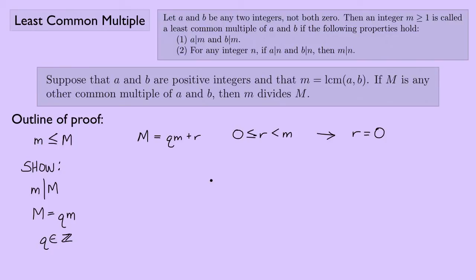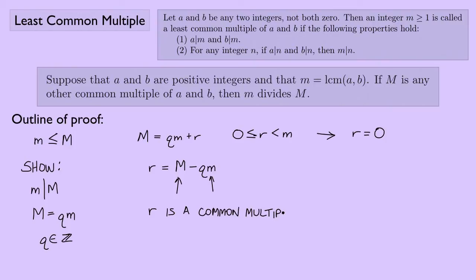I can solve for r: r equals uppercase M minus q times lowercase m. Now, both uppercase M and lowercase m are multiples of a and b, so r must also be a common multiple of a and b. But r is less than lowercase m, and lowercase m was the least common multiple. So we must have r equals zero, because if r were a common multiple of a and b and it were less than lowercase m, then m would no longer be the least common multiple. I think we're ready for a proof.